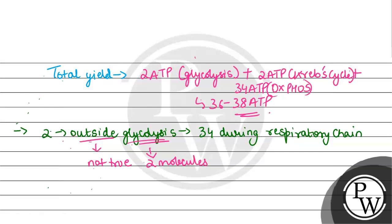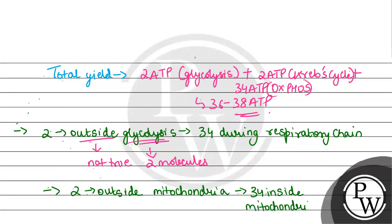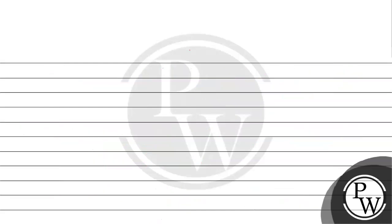Option B says 2 are produced outside mitochondria and 34 inside mitochondria. This option is correct. Our 2 ATP molecules are produced in the cytoplasm during glycolysis — which occurs outside the mitochondria. The remaining molecules are generated inside the mitochondria. So option B is the correct answer.